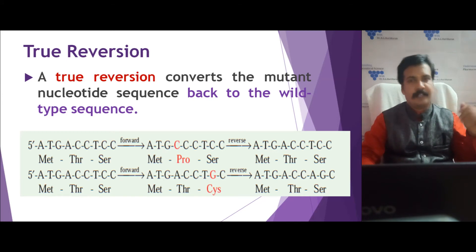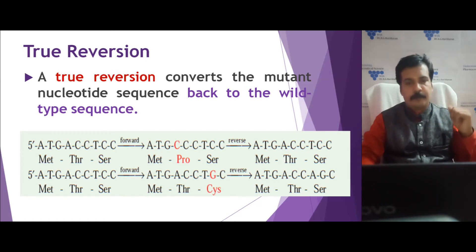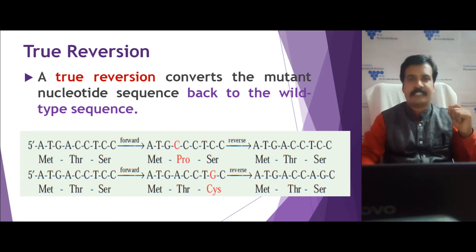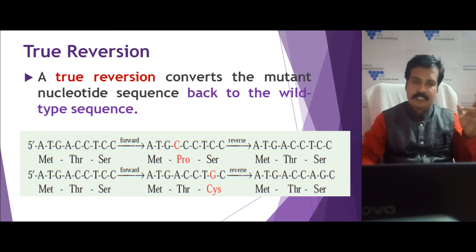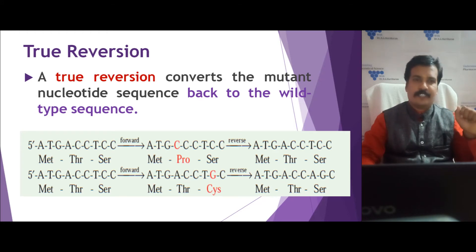Another example: TCC codes for serine, a forward mutation converts cytosine to guanine, so TGC codes for cysteine. Then a reverse mutation occurs, reverting it back to serine. This is also called true reversion.